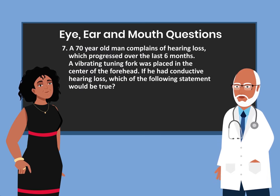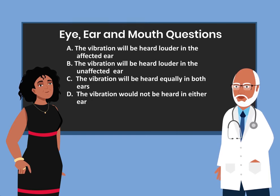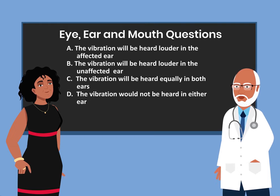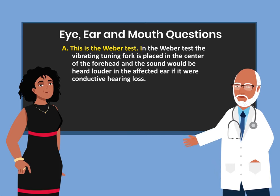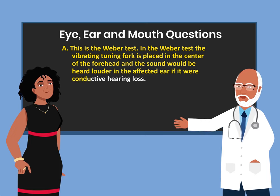Question 7. A 70-year-old man complains of hearing loss which progressed over the last 6 months. A vibrating tuning fork was placed in the center of the forehead. If he had conductive hearing loss, which of the following statements would be true? A. The vibration would be heard louder in the affected ear. B. The vibration would be heard louder in the unaffected ear. C. The vibration will be heard equally in both ears. D. The vibration would not be heard in either ear. The answer is A. This is the Weber test. In the Weber test, the vibrating tuning fork is placed in the center of the forehead and the sound would be heard louder in the affected ear if it were conductive hearing loss.